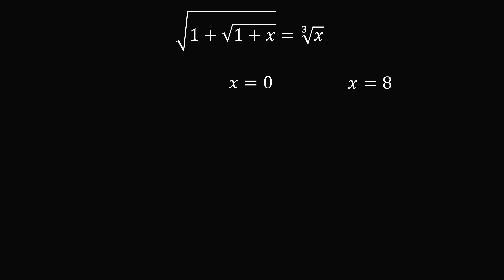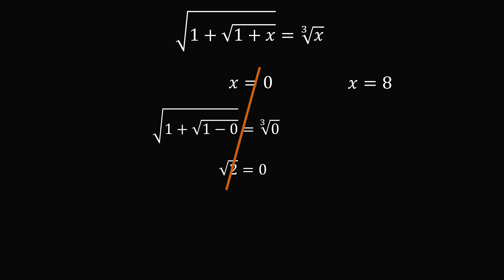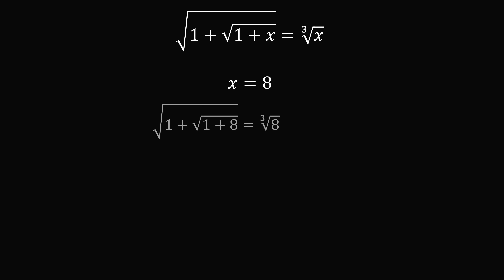For x equals 0: we have the square root of 1 plus the square root of 1, which equals the square root of 2, but the cube root of 0 equals 0. The square root of 2 equals 0 is clearly false — another extraneous solution. For x equals 8: 1 plus 8 equals 9, the square root of 9 equals 3, then 1 plus 3 equals 4, and the square root of 4 equals 2. The cube root of 8 also equals 2, so 2 equals 2. This is valid.